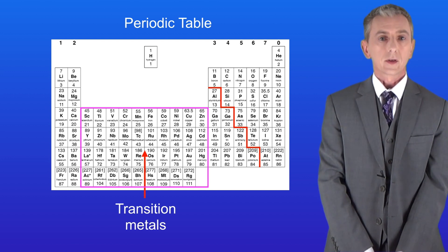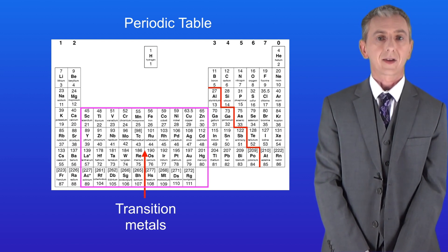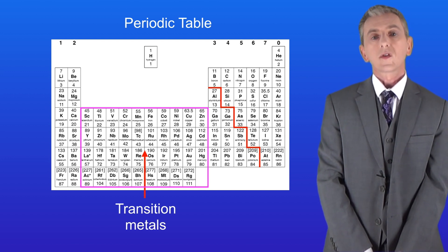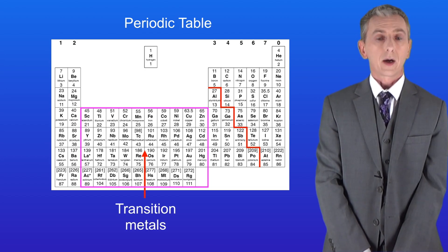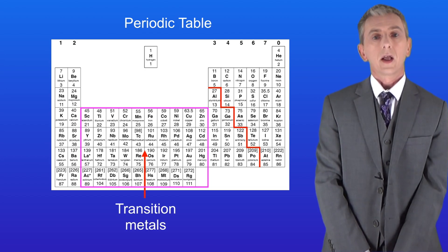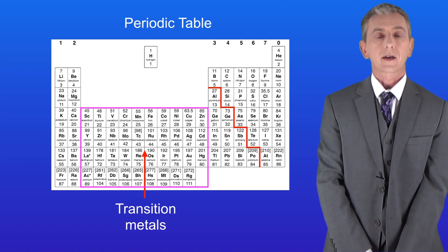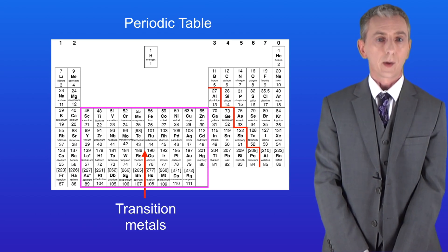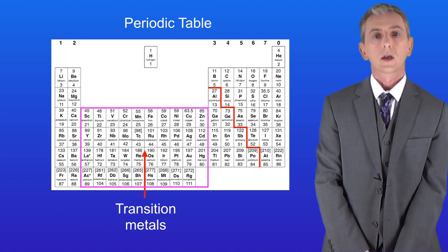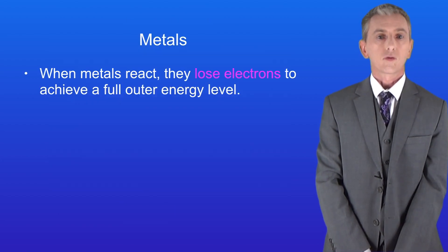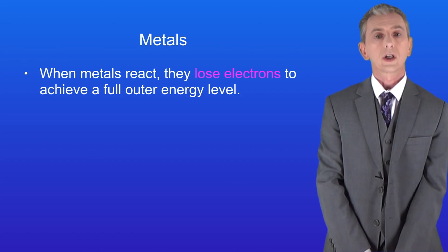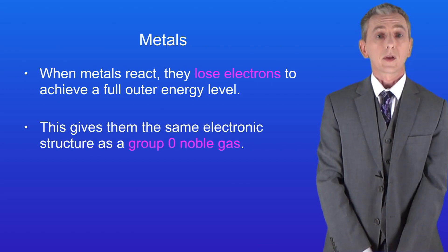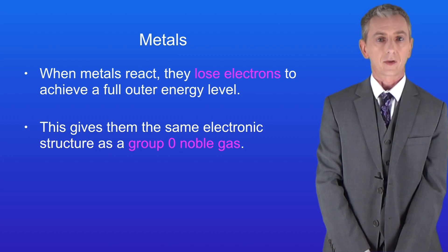In the last video we looked at the group zero noble gases. We saw that these elements all have a full outer energy level and that explains why they're unreactive. Here's a key fact you need to know about metals: when metals react they lose electrons to achieve a full outer energy level. This gives them the same electronic structure as a group zero noble gas.